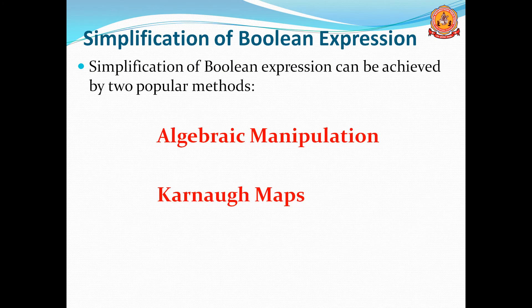Today's topic is the simplification of Boolean expressions. Any Boolean expression can be reduced or simplified by using two different methods. The first one is algebraic manipulation, which reduces the Boolean expression into shorter forms. The second, easier method is the K-map or Karnaugh map.